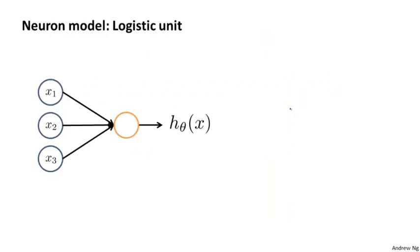In a neural network, or rather in an artificial neural network that we implement in the computer, we're going to use a very simple model of what a neuron does. We're going to model a neuron as just a logistic unit. So when I draw a yellow circle like that, you should think of that as playing a role analogous to maybe the body of a neuron. And we then feed the neuron a few inputs via its dendrites or its input wires. And the neuron does some computation and outputs some value on this output wire. Or in a biological neuron, this was the axon.